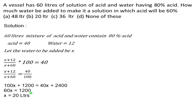So we need to add 20 liters of water to make the acid 60%. The answer is Option B. If you don't understand, please leave feedback. Thank you for watching — like, share and subscribe.